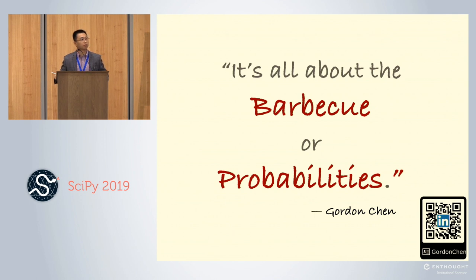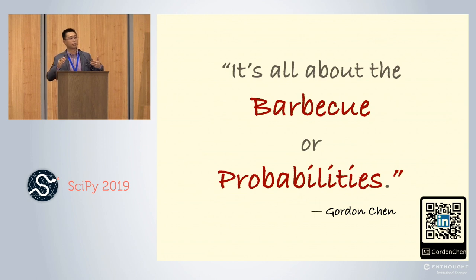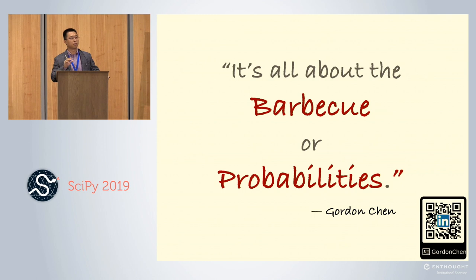I wanted to clarify the use of isotonic regression in the calibration part. For isotonic regression, you need the predictions and labels to be ordered in a particular way. Was the ordering based on the 24 feature columns in the dataset? The answer is simple: scikit-learn takes care of all the work. I used the CalibratedClassifierCV from scikit-learn with isotonic regression, and it applies cross-validation as well. That is the reason the ROC curve shifts a little bit when shown — because of the cross-validation.